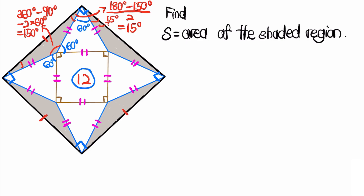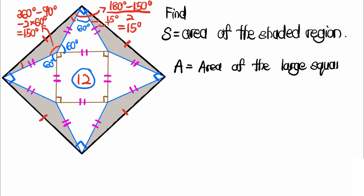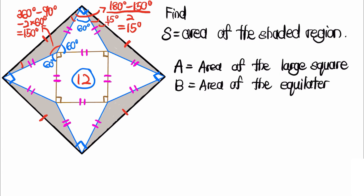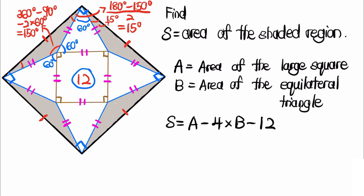Similarly, all four corners are 90 degrees, and because the four isosceles triangles are congruent to each other, this implies that the large quadrilateral is a square. Now if we denote A to be the area of the large square and B to be the area of one equilateral triangle, then we know s is equal to A minus 4 times B minus 12.